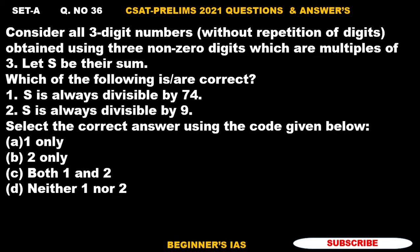Here first of all you need to identify whether we need to find the correct answer or wrong answer, incorrect answer. So be careful with that. Next thing is here we need to identify three non-zero digits which are multiples of three. If you find these three numbers we can form three digit numbers without repetitions.